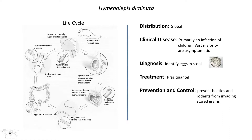The proglottids become gravid after about three months and begin to break off, releasing eggs into the environment. In peridomestic situations where rodent droppings are common, beetles eat the eggs and acquire the cysticercoid stage, which lodges in the tissue of the beetle. The beetle is then eaten, releasing the cysticercoid, which develops into the adult tapeworm. Like Hymenolepis nana, the distribution of diminuta is also global and primarily an infection of children. The vast majority infected with either species are asymptomatic — these are incidental findings — and treatment doesn't result in clinical improvement because there was nothing to treat beyond the parasite's presence.